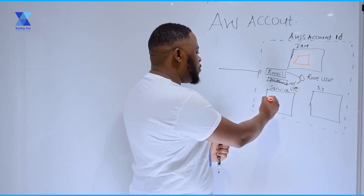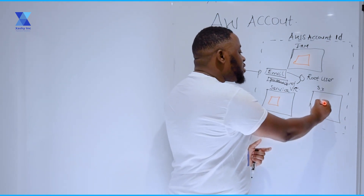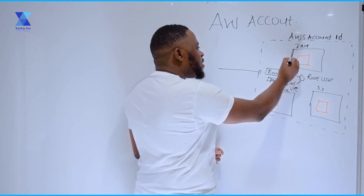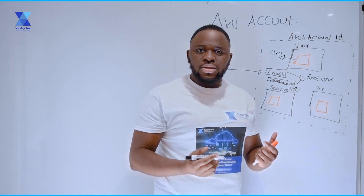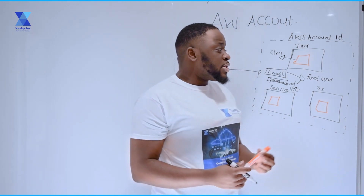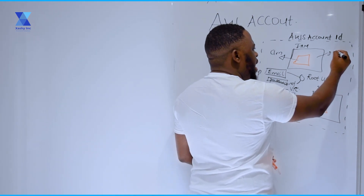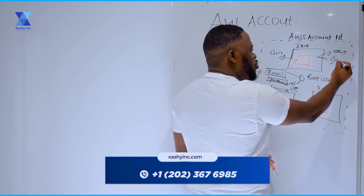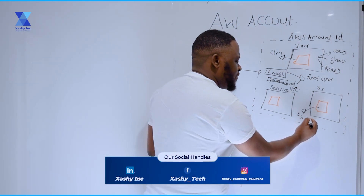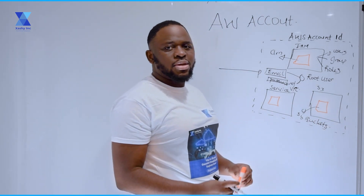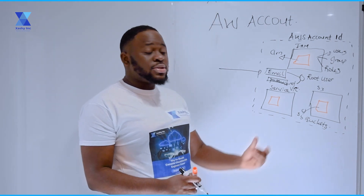Anytime you create a resource on AWS, that resource is actually going to be given an ARN, or an ID. An ARN simply means an Amazon Resource Name, which is just the unique identifier of the resource you created from that AWS service. For example, if I go to IAM, I can create resources like IAM users, IAM groups, or IAM roles. If I go to S3, I can create resources like an S3 bucket. Every resource is going to have an ARN — the unique identifier of that particular resource in that AWS account.